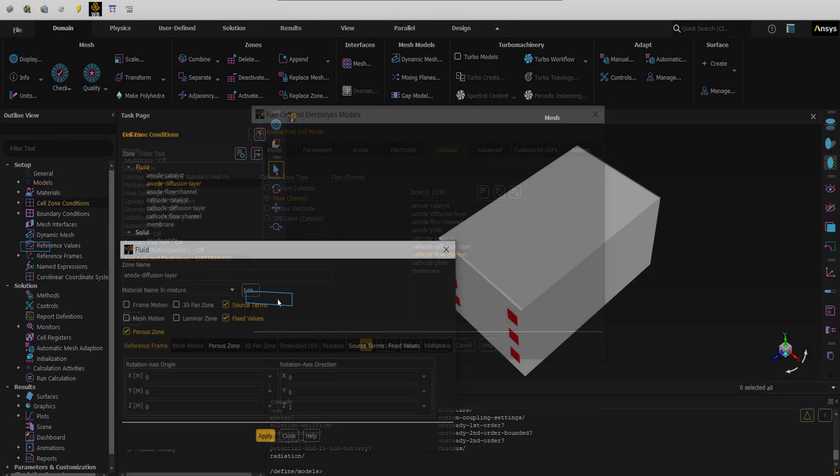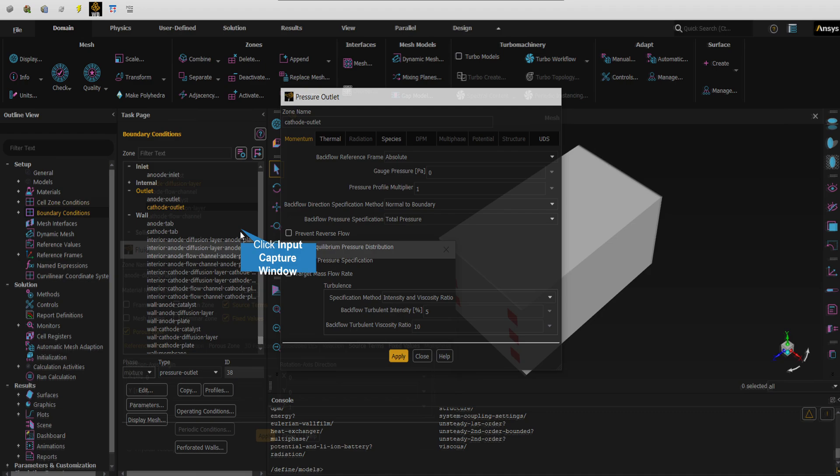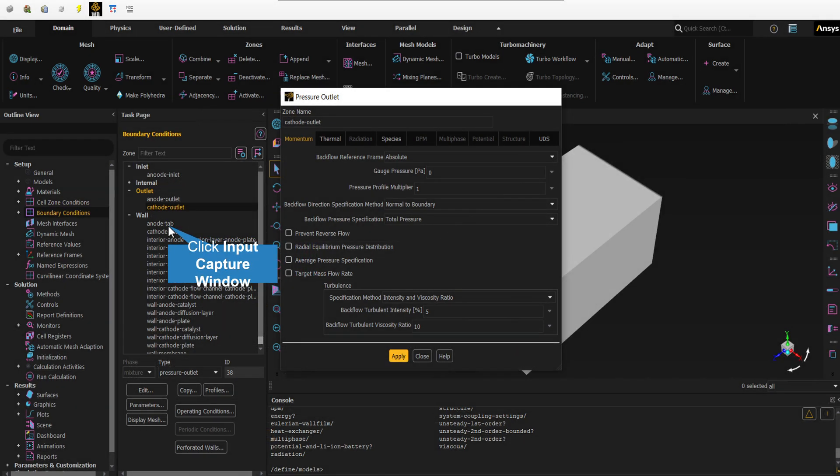The porous zone option is automatically activated for this zone. After the inlet and outlet boundaries, we check the wall boundaries of the electrolyzer. This electrolyzer consists of several internal and external walls.